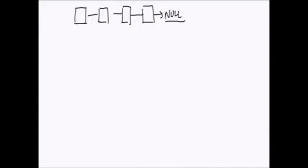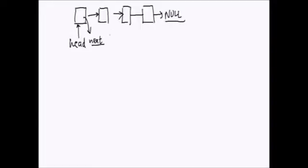Today we will be discussing a problem on linked list. A linked list is a collection of nodes which is terminated by a special node called the null node. The start of the list is always called the head. Every node has one pointer which points to the next node, so from the head we can always traverse through all the nodes using the next pointer and get the data out.